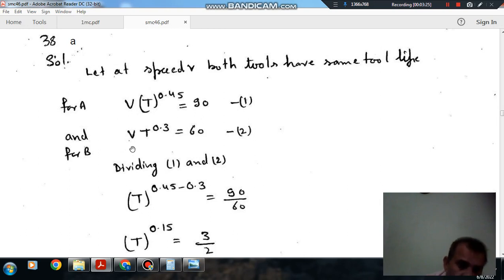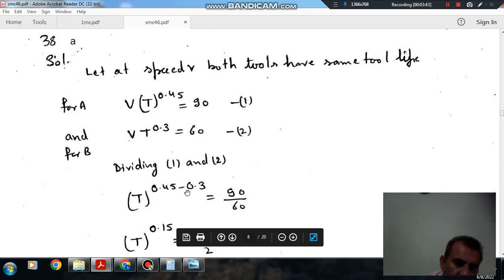So it means we are assuming same speed and same tool life for both. So now if we divide these two equations, we can get this quantity, that V and T at which the tool life of both are equal. If we divide these two quantities, so we can cancel out V and T, it will be T raised by 0.45 minus 0.3, that is 90 by 60.